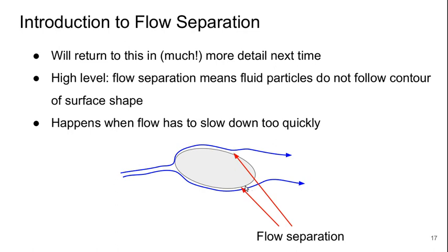And suddenly we see two points, one on the top, one on the bottom, where the streamlines stop following the shape of the object. And when that happens, that's what we call flow separation. And without getting into any of the technical details yet, but don't worry, we'll get into them later on. This essentially happens when the flow has to slow down too quickly.